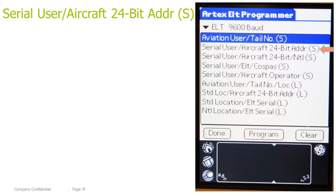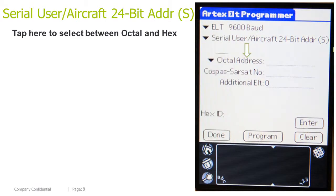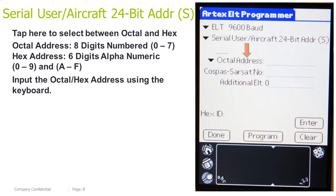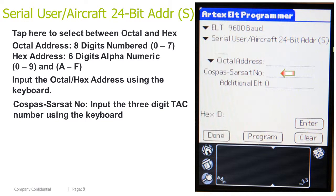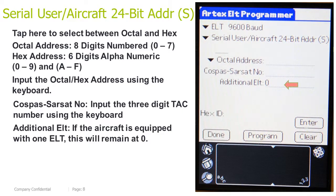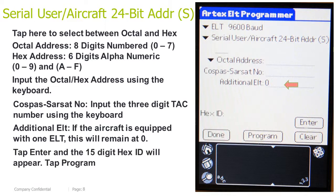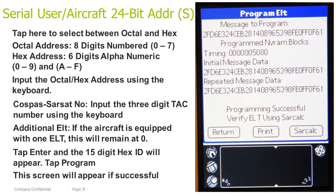Serial User, Aircraft 24-bit Address Short. Tap here to select between octal and hex. Octal address is 8 digits numbered 0–7, and hex address is 6 digits alphanumeric 0–9 and A–F. Input the octal or hex address using the keyboard, then input the 3-digit TAC number. For Additional ELT: if the aircraft is equipped with 1 ELT, this number remains at 0; if the aircraft has additional ELTs such as life rafts, this number can go between 1 and 3. Tap Enter and the 15-digit HEX ID will appear, then tap Program. This screen will appear if successful.